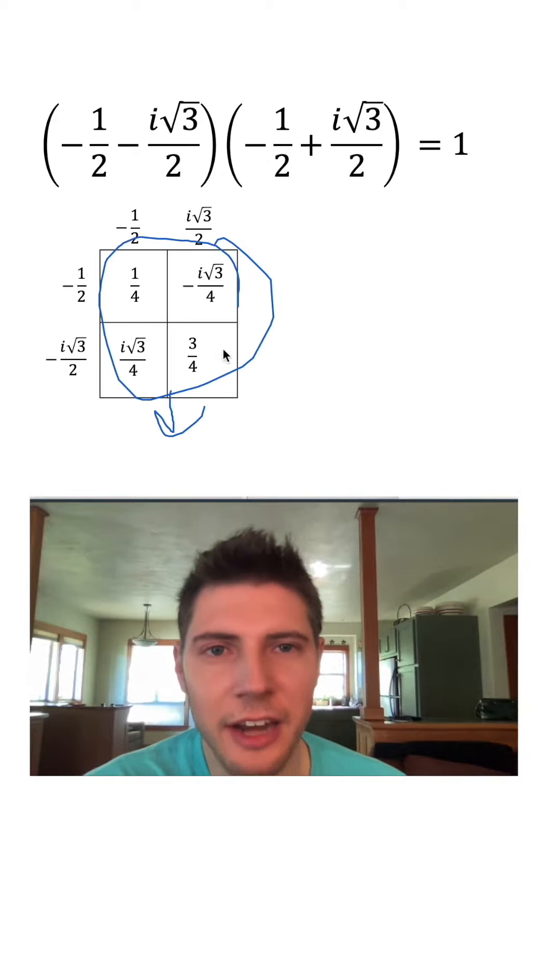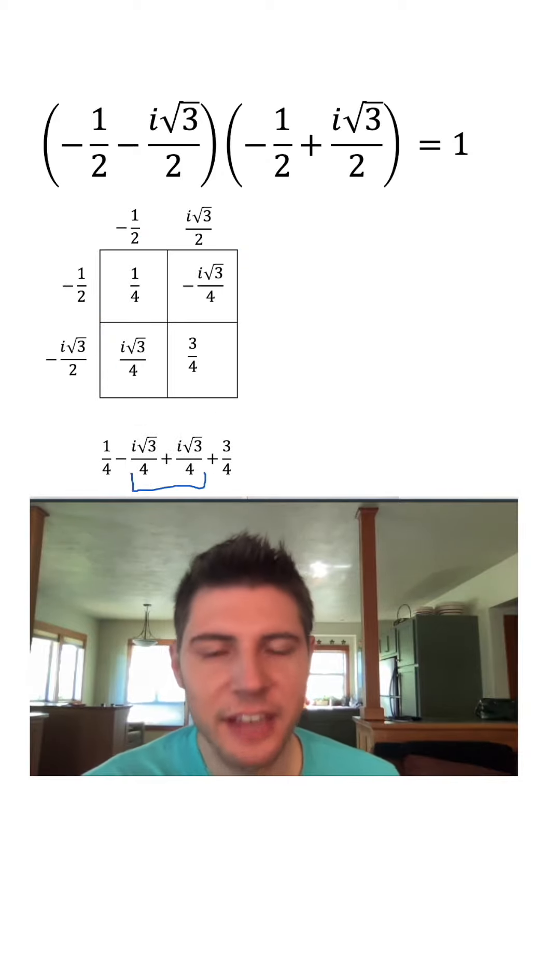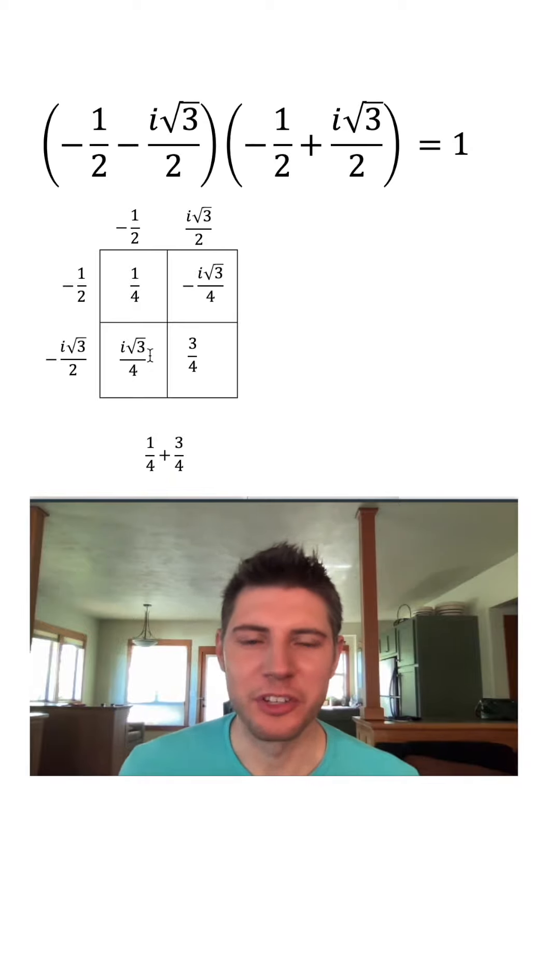Now we can pull all this inside stuff out and add them together. These two pieces cancel each other out. And then one-fourth plus three-fourths is equal to one. That is it.